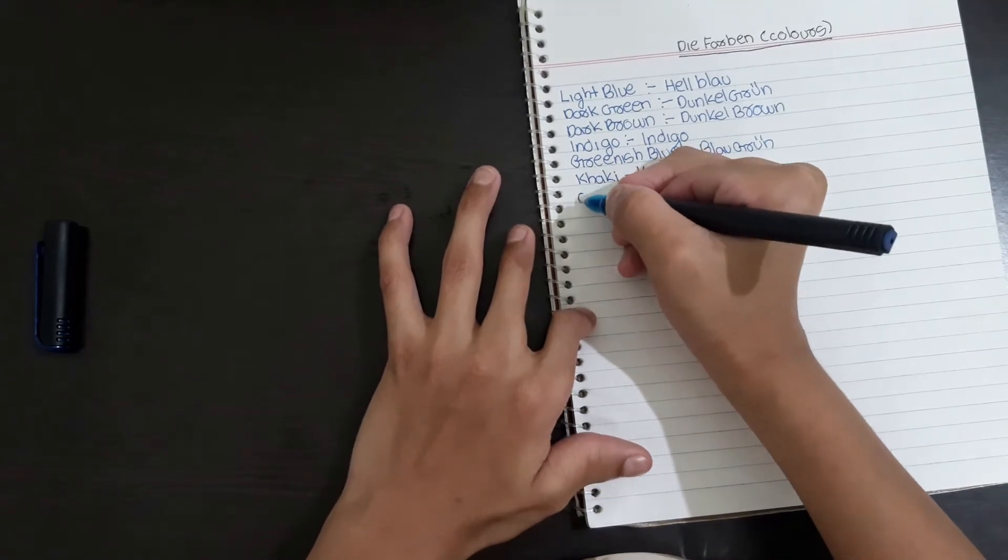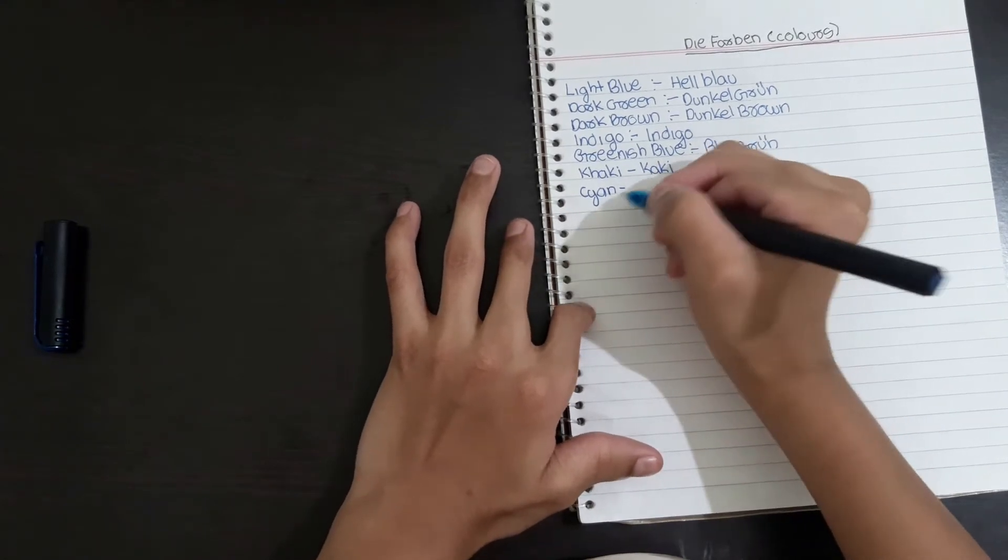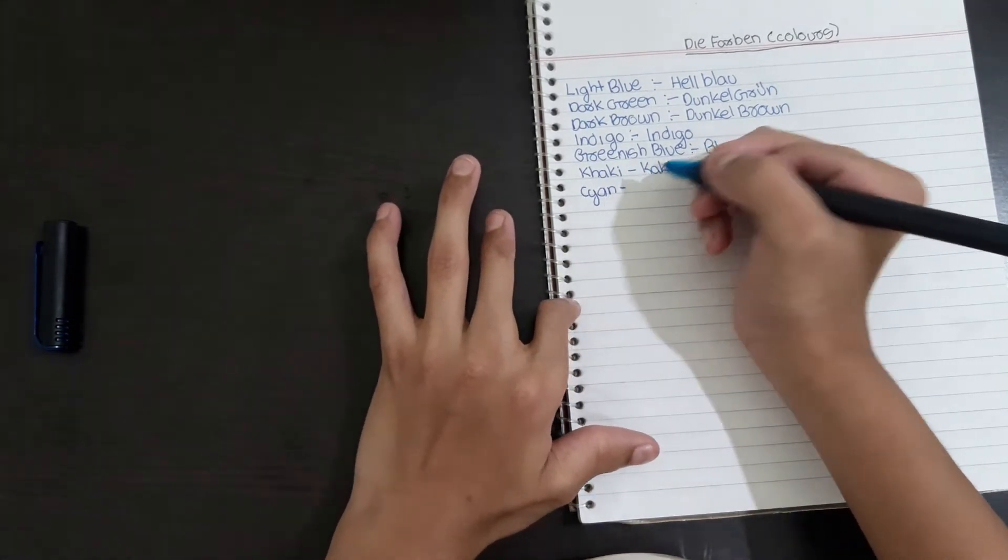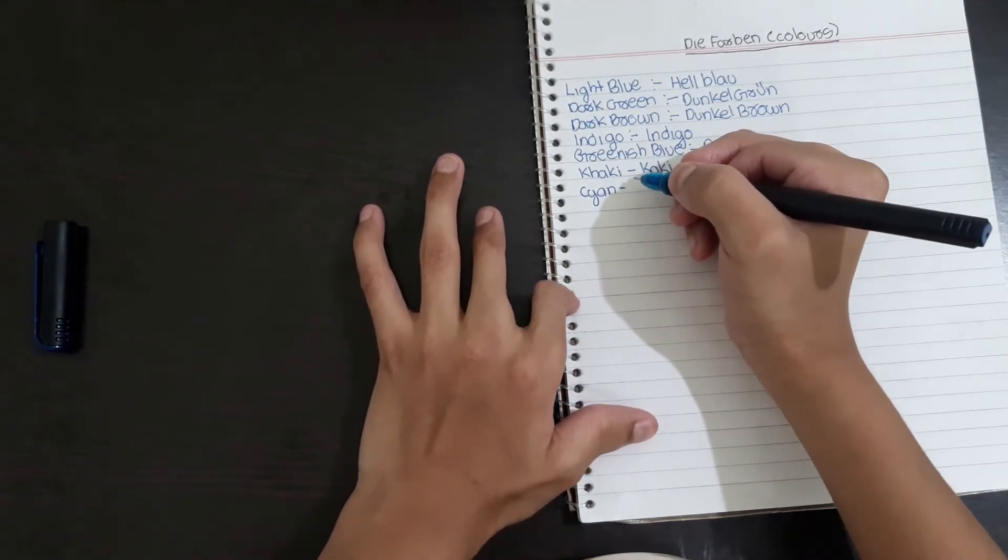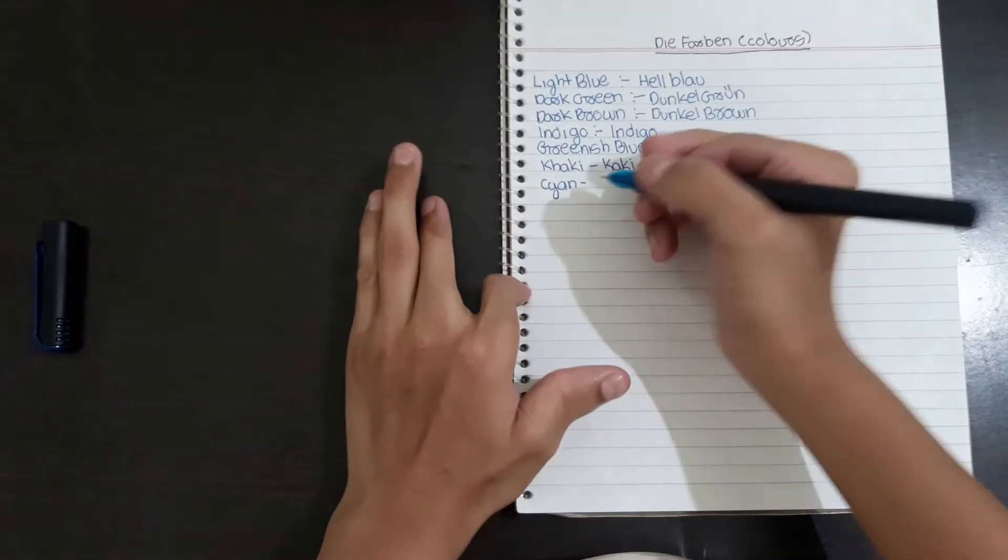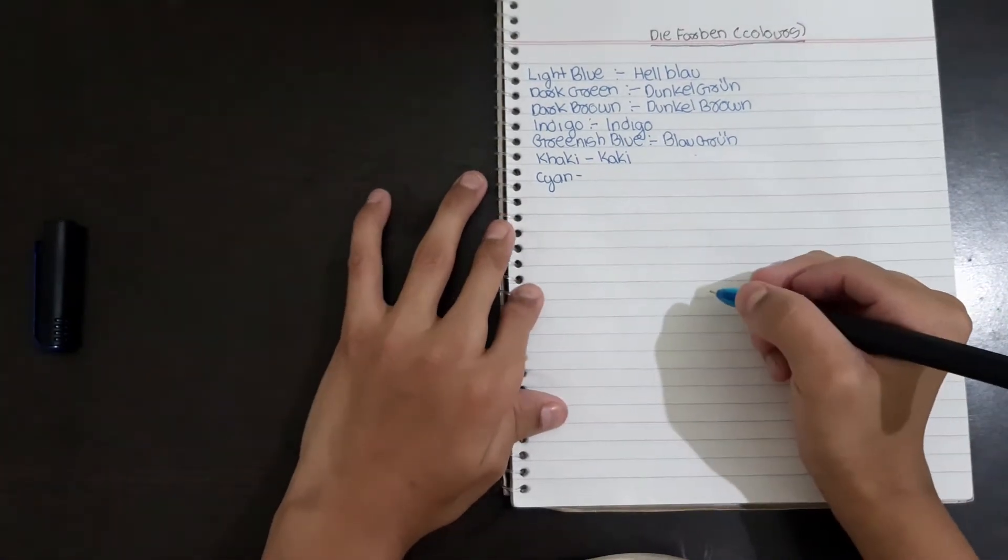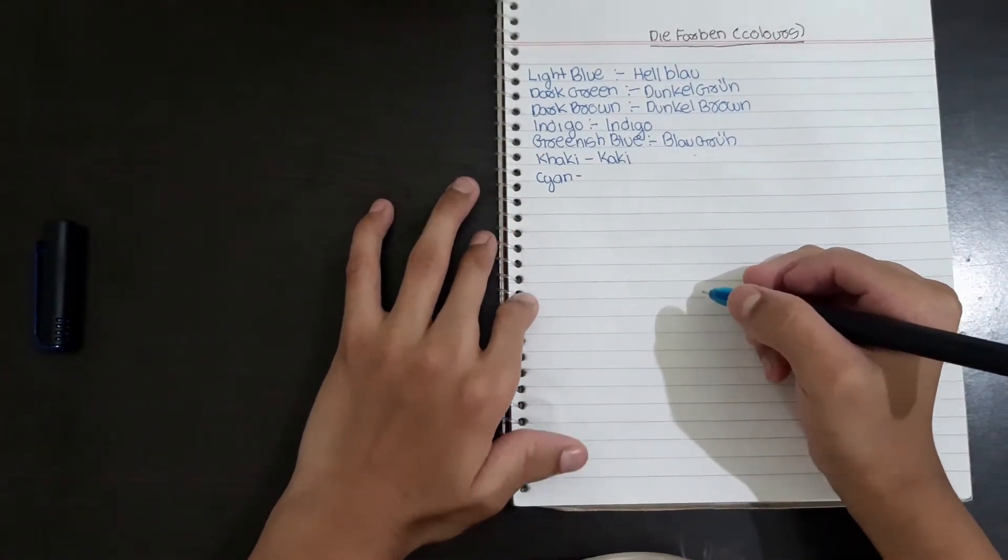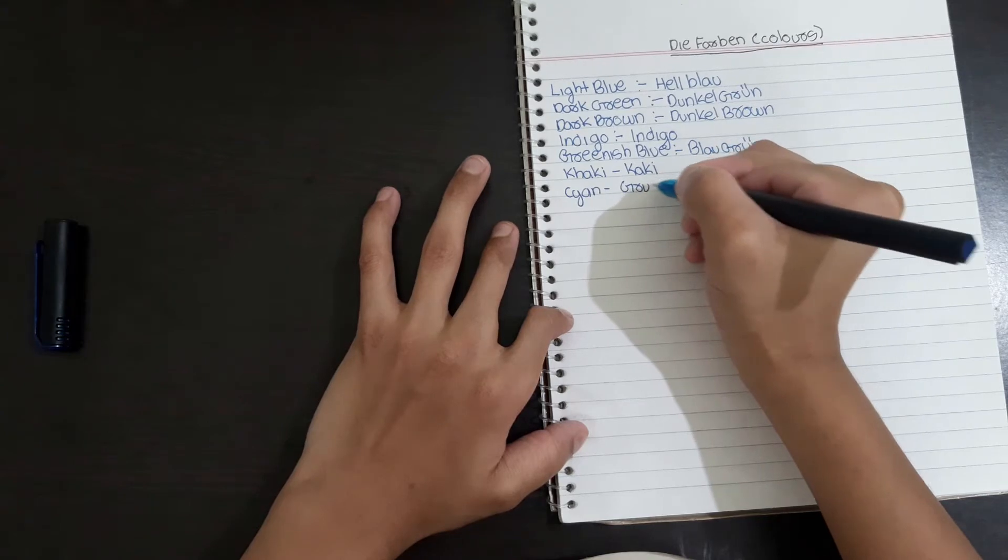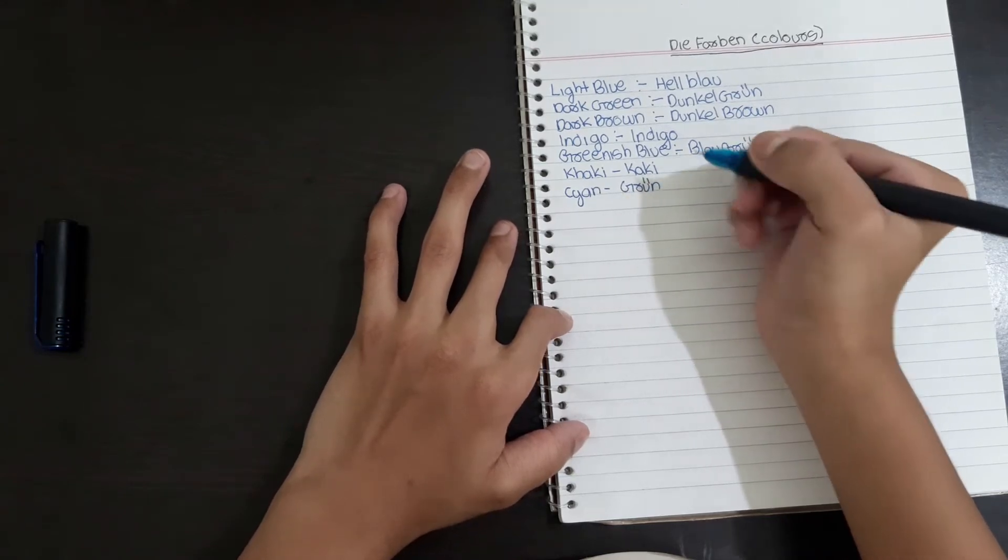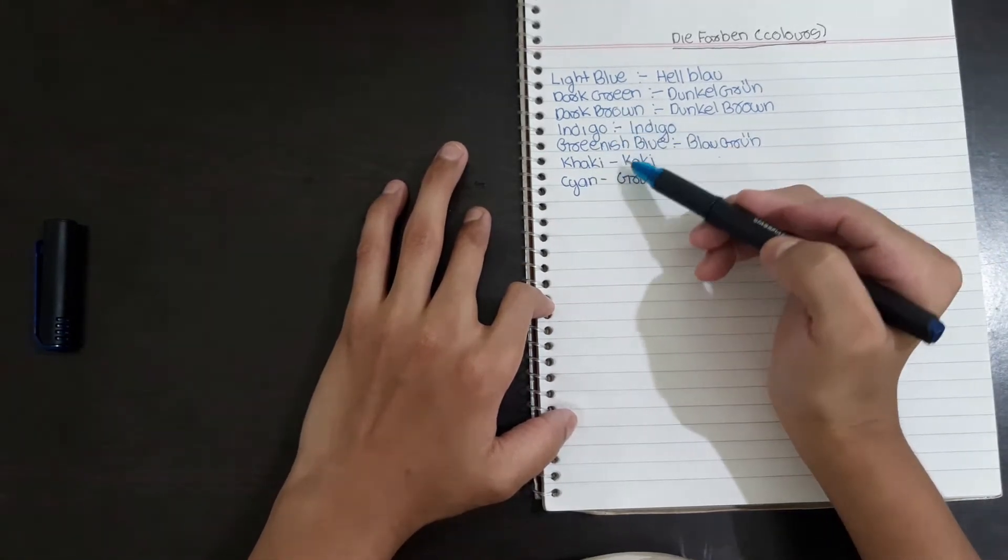Cyan is aqua color. Cyan means Grünblau, exactly the opposite of greenish blue.